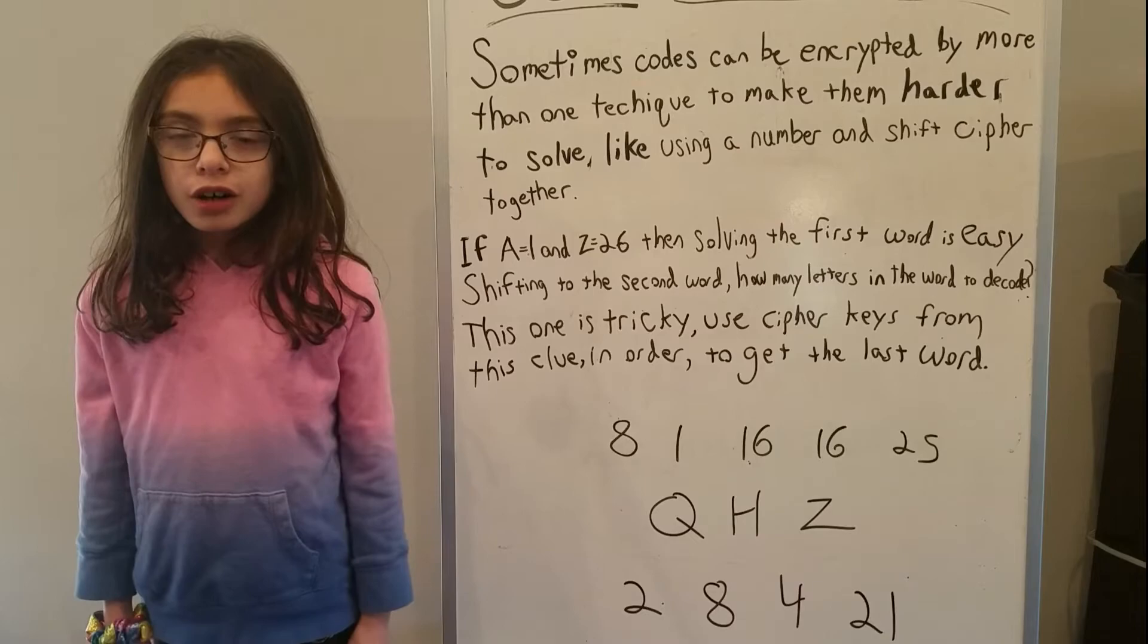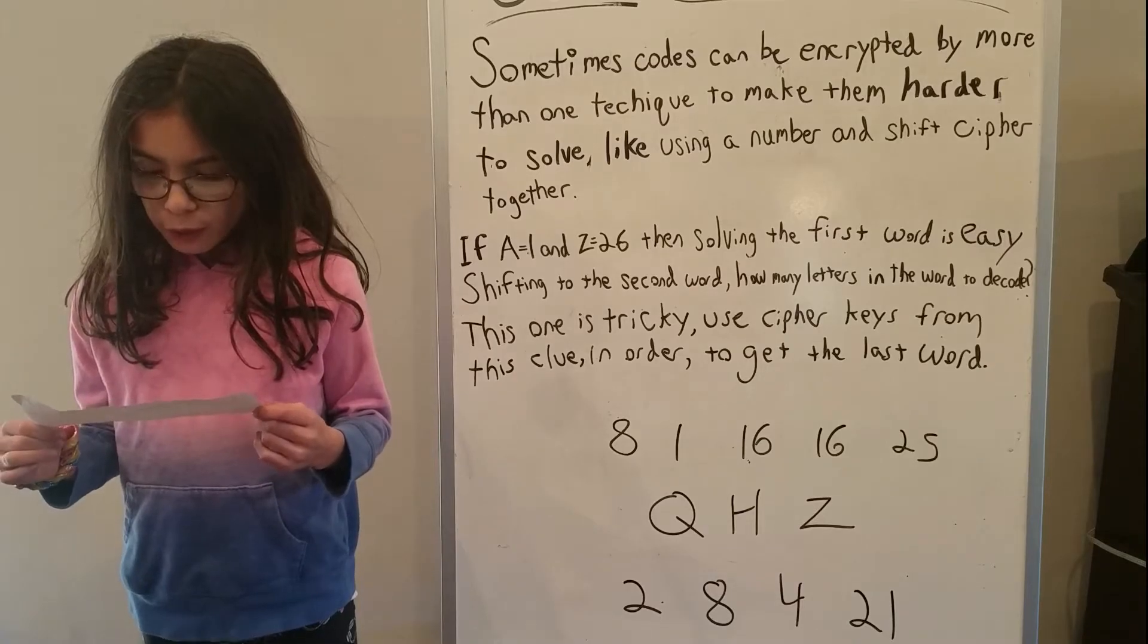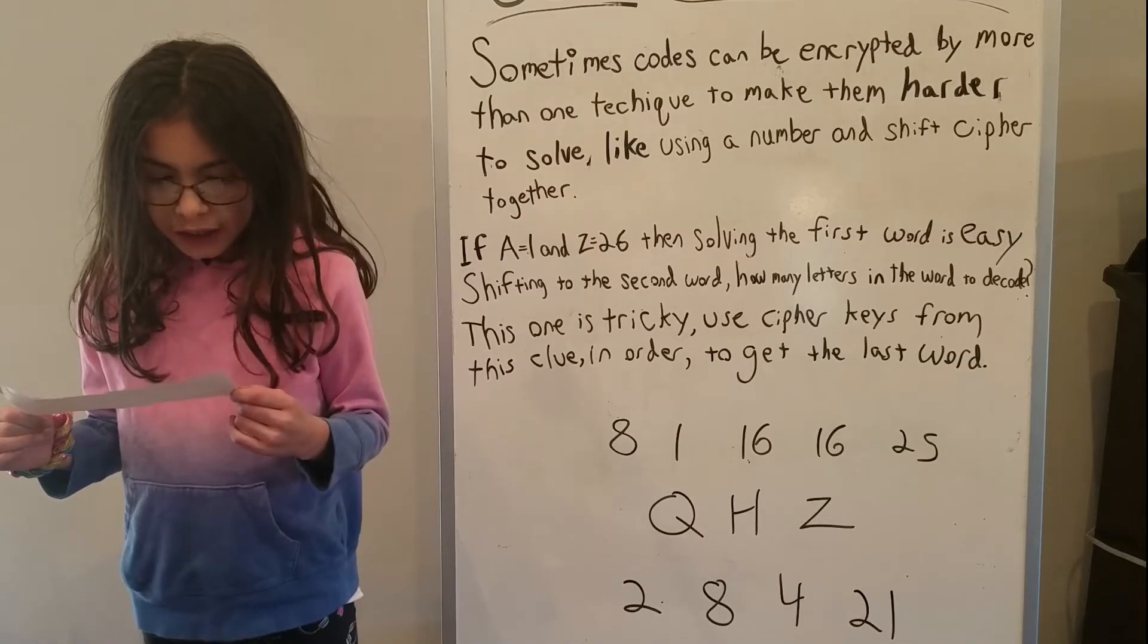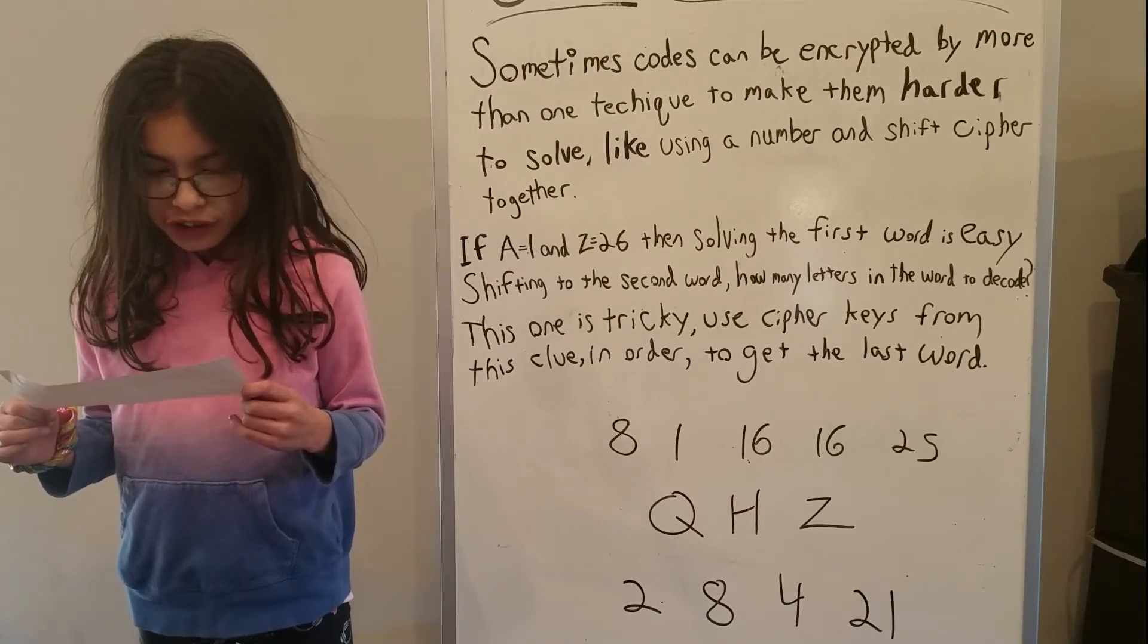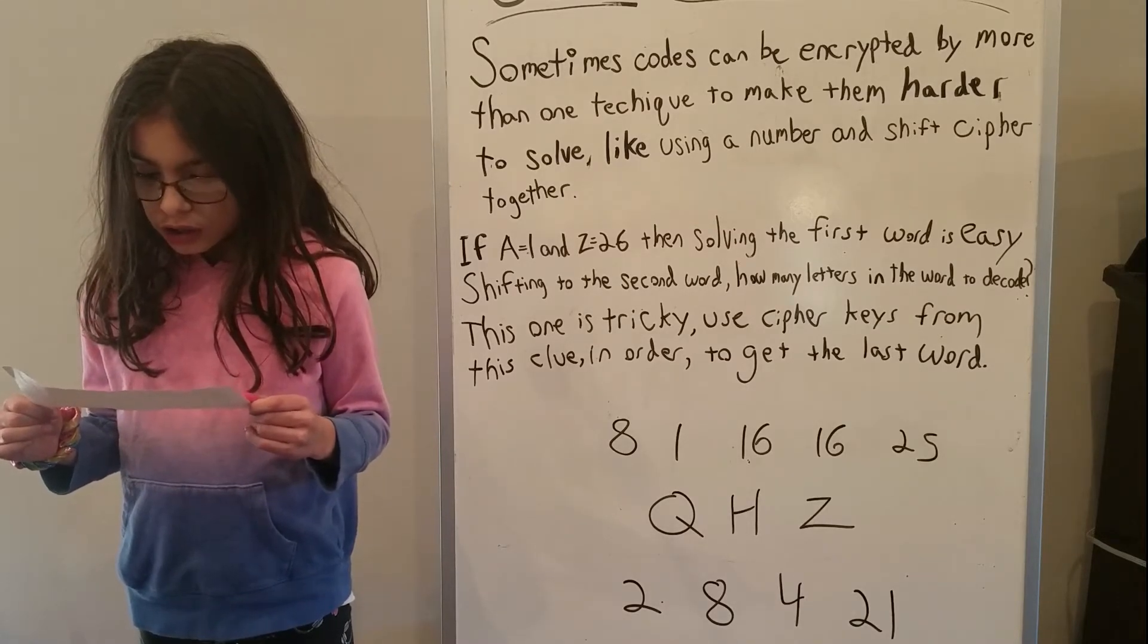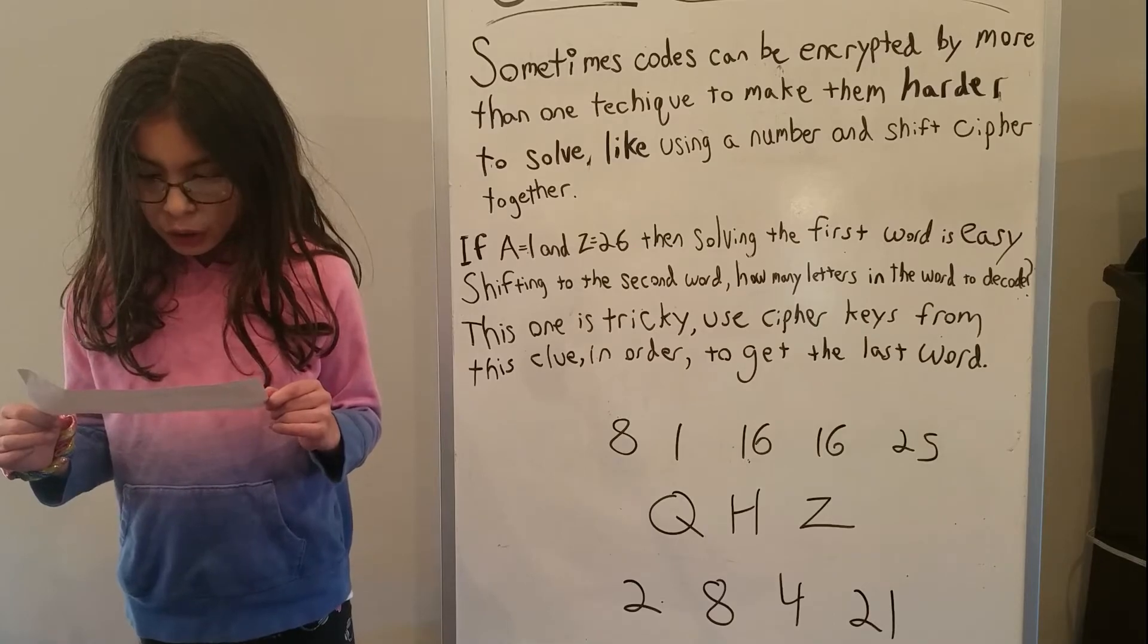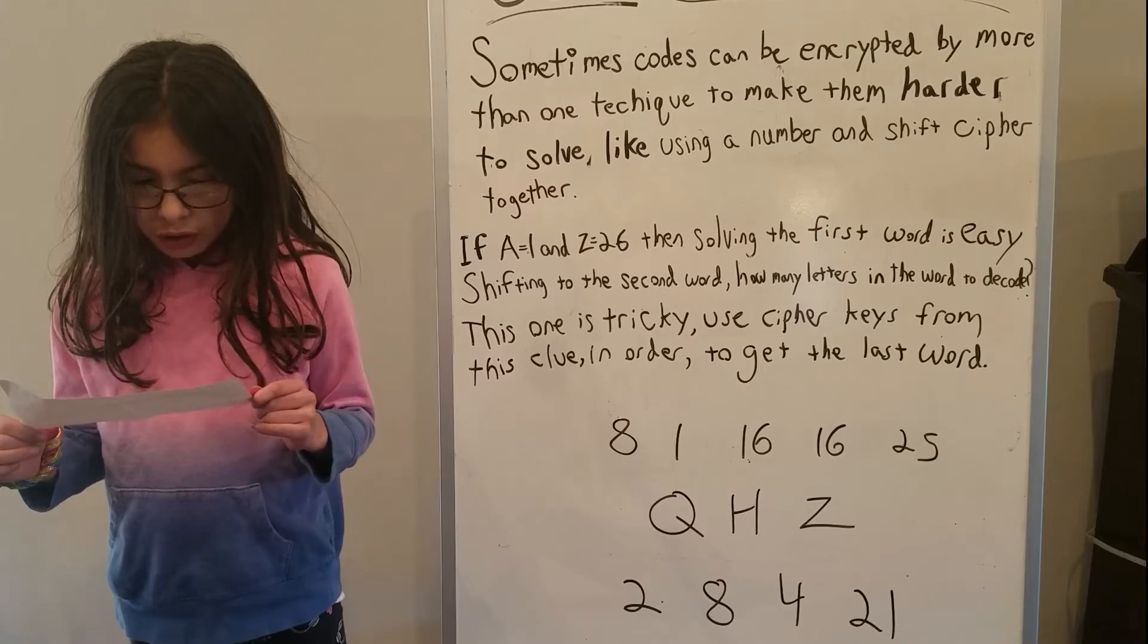Here's our code and secret message. Sometimes codes can be encrypted by more than one technique to make them harder to solve, like using a number and shift cipher together. If a equals 1 and z equals 26 then solving the first word is easy. Shifting to the second word, how many letters in the word need decoding? This one is tricky. Use cipher keys from this clue in order to get this last word. Good luck.